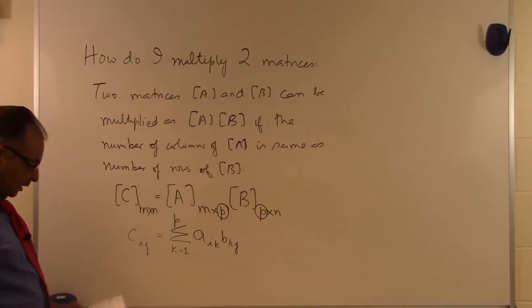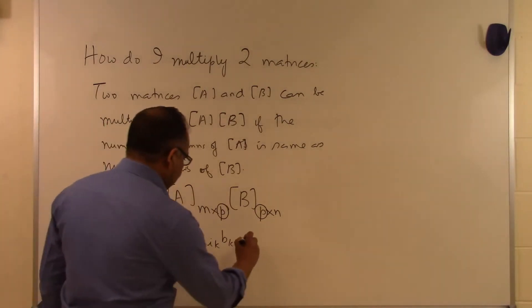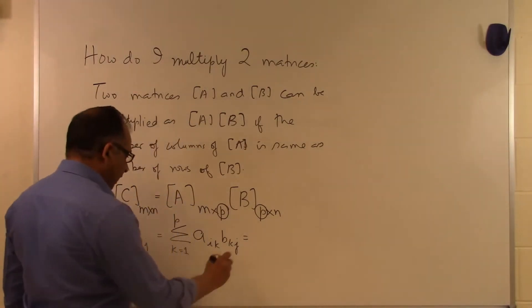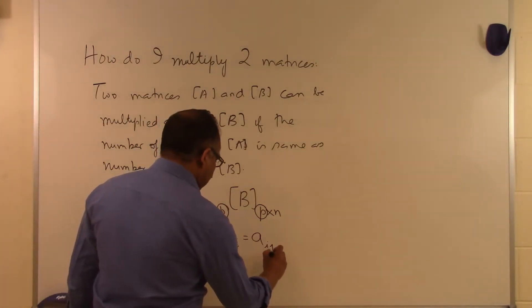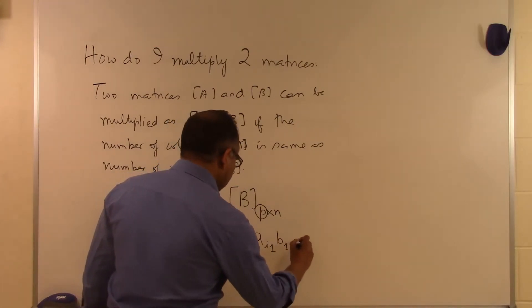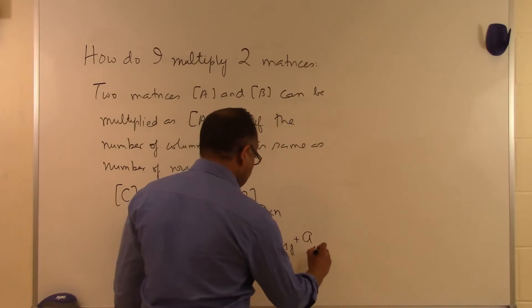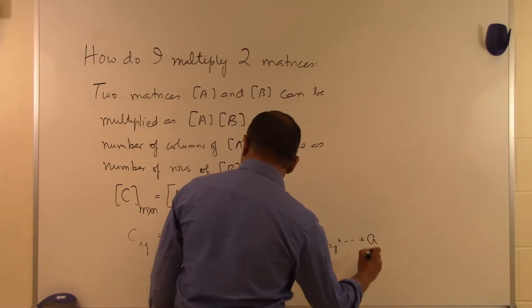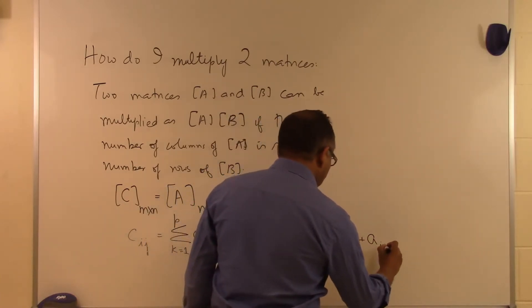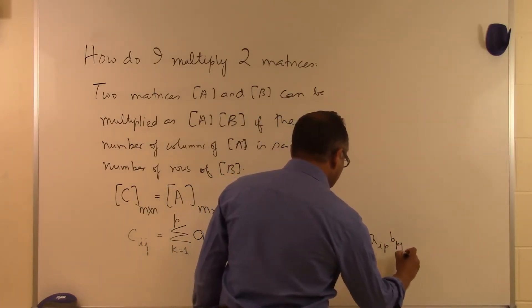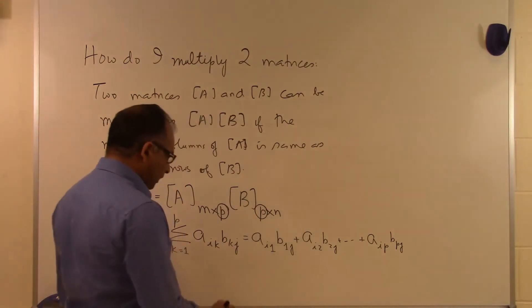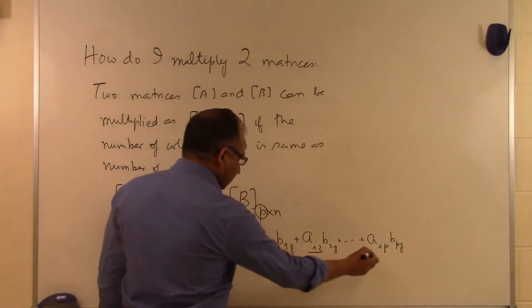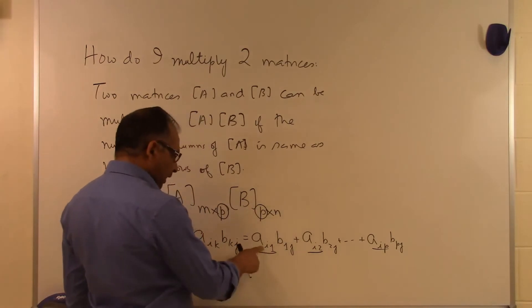If we expand this, we get A_i1 times B_1j plus A_i2 times B_2j all the way up to A_ip times B_pj. All these elements taken from the A matrix are in the ith row, but the column number is changing.